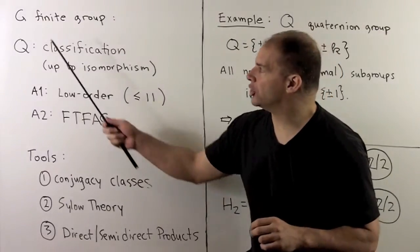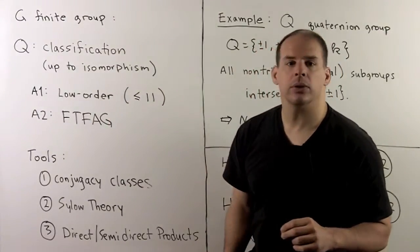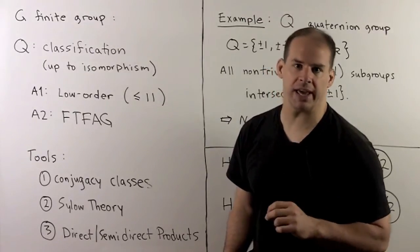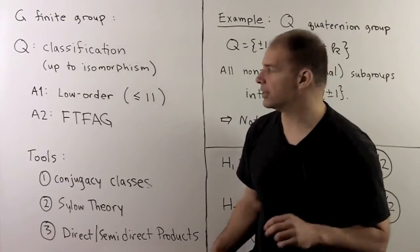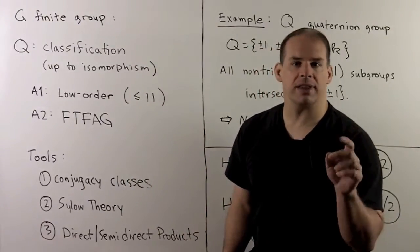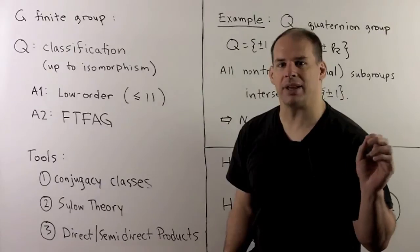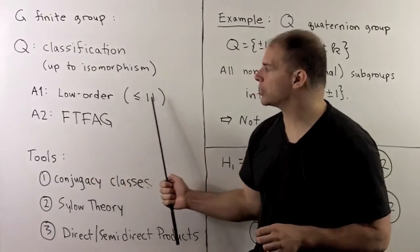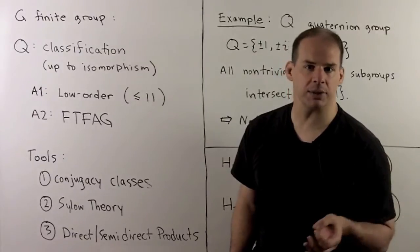Now, G is a finite group. We now have the tools to answer the question of classification in special cases. For instance, if G is a group of low order, so for us that means G has less than or equal to 11 elements, then we can classify all groups of this type up to isomorphism.